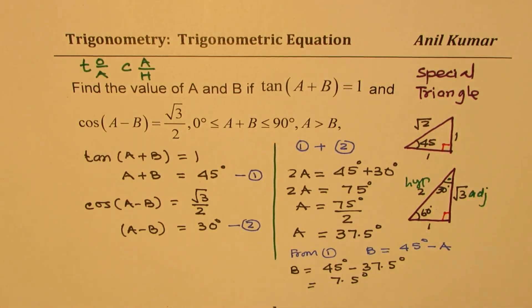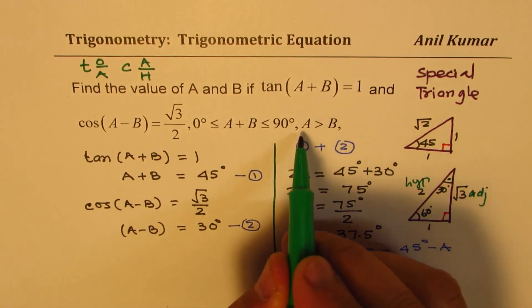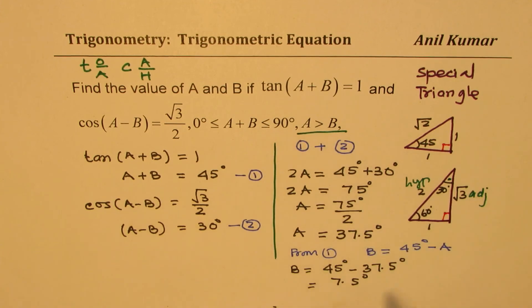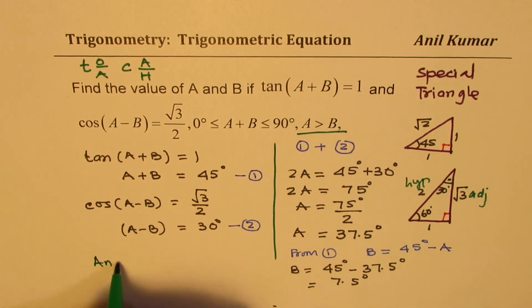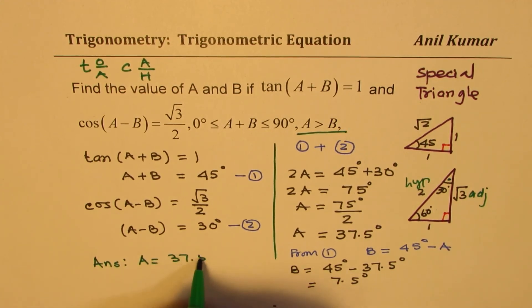Now look at the conditions. We have condition A is greater than B. So our answer is: A = 37.5 degrees and B = 7.5 degrees.